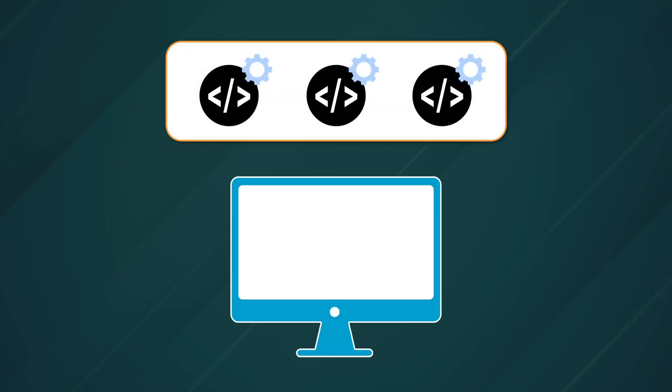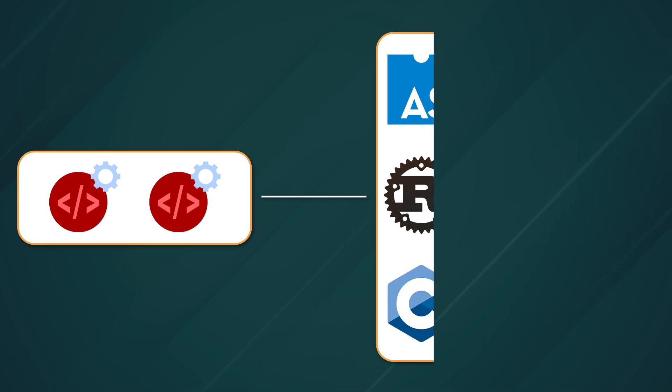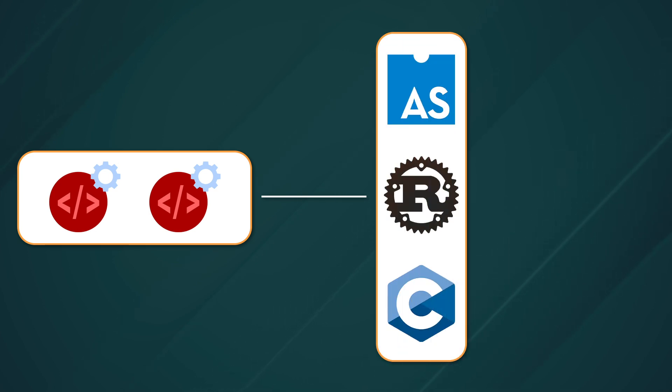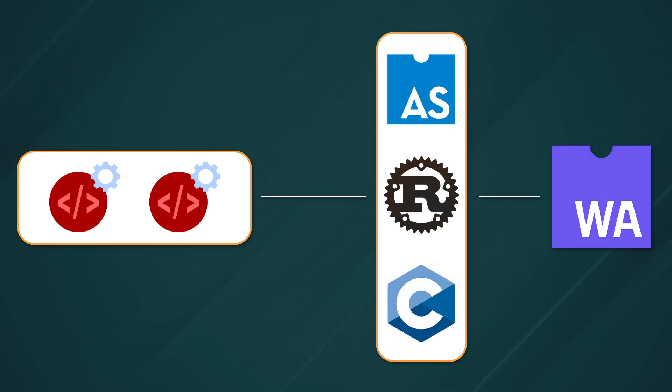Let's say that you've profiled your application and you've found that there are two functions that are egregiously slow compared to the rest of your codebase. Theoretically, you could reduce your overhead costs and serve your customers better by rewriting those functions in AssemblyScript, Rust, or C, compiling them to WebAssembly binaries, and executing them inside of your Node project. Hopefully, this has given you some insight into how Node can interface with WebAssembly, deliver better performance, and meet your enterprise needs at scale.